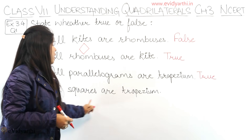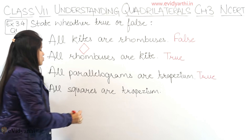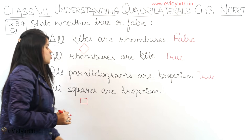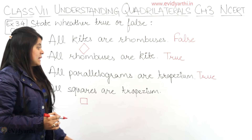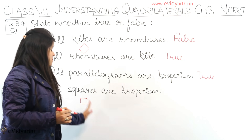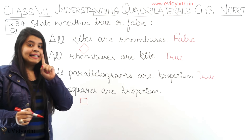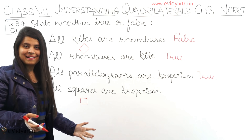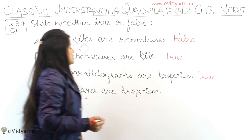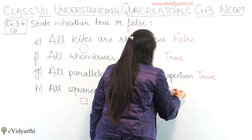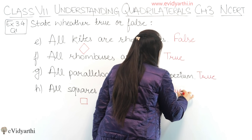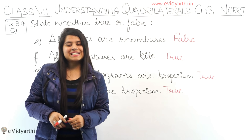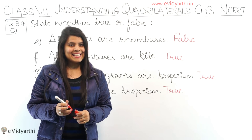All squares are trapezium — again this is true, for the same reason. The diagonals bisect each other, and at least one pair of parallel lines is required for a trapezium, whereas in a square all sides are parallel. So this statement is also true. This was question number one. Now let's move to the next question.